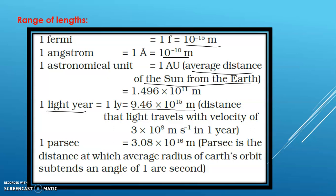1 Parsec is the distance at which the average radius of the Earth's orbit subtends an angle of 1 arc second. 1 Parsec is equal to 3.08 into 10 to the power of 16 meters. For comparison: 1 Parsec is 10 to the power of 16 meters, 1 light year is 10 to the power of 15 meters, and 1 astronomical unit is 10 to the power of 11 meters. We will do the conversions between these units in a separate video.